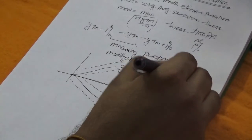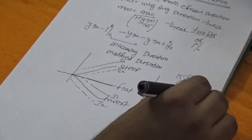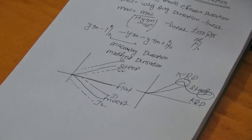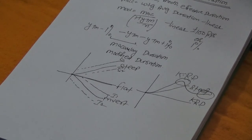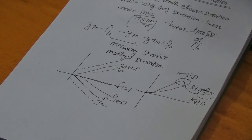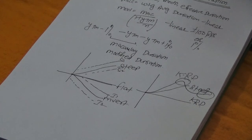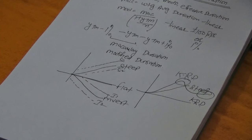I am interested in calculating KRD — key rate duration — at specific points of the yield curve. Key rate duration is important for estimating expected changes in bond or portfolio value when the yield curve shifts in a non-parallel manner. Effective duration also calculates expected bond price change for a 1% move, but it is only valid for a parallel shift in the yield curve. Macaulay, modified, and effective duration are all effective for the entire yield curve, but key rate duration is effective when calculating for a specific part of the yield curve.